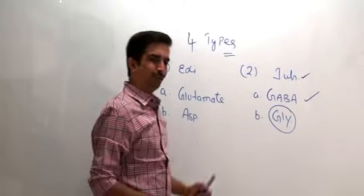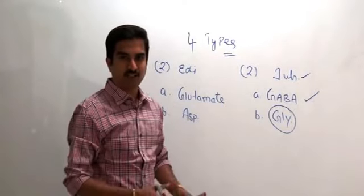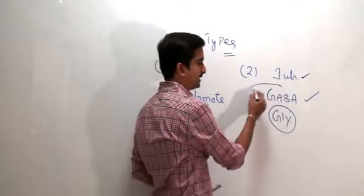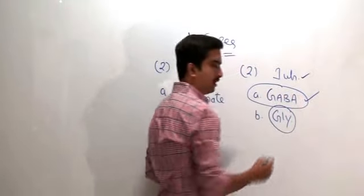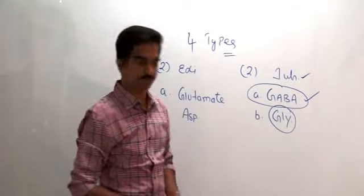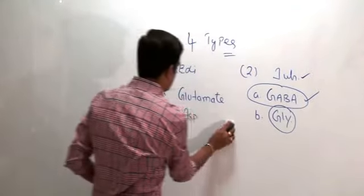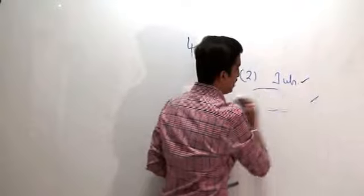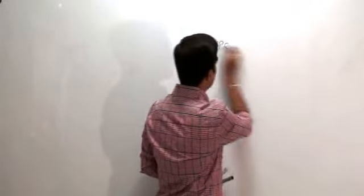Now I will discuss all four neurotransmitters one by one. First, I am going to discuss GABA as a neurotransmitter in the central nervous system. We will cover its synthesis, the types of GABA receptors, and the pharmacological actions of certain agonists and antagonists on GABA receptors.